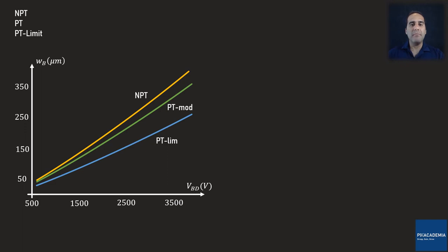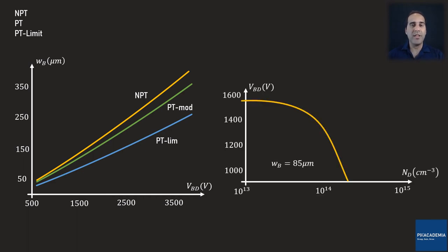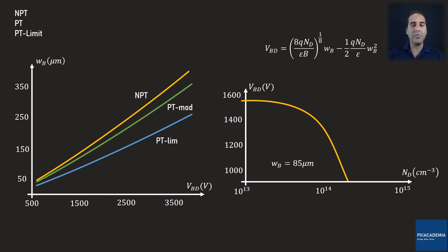The base width affects the breakdown voltage, but what about the dopant concentration of the base region? Here, the breakdown voltage is plotted against the dopant concentration of the base region. Unlike the base-width diagram, the relationship between breakdown voltage and N_D is not linear. However, increased dopant concentration of the base region reduces the diode breakdown voltage — initially the reduction rate is very slow, then it becomes much faster as N_D increases. The relationship between breakdown voltage, charge carrier concentration of the base region, and the base width is expressed by a specific formula, which can be used to re-plot both diagrams.